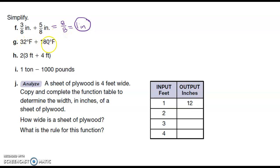32 degrees Fahrenheit plus 180 degrees Fahrenheit. So 180 plus 32 is equal to 212 degrees Fahrenheit. This is interesting because this is when water boils. And this is when water freezes.